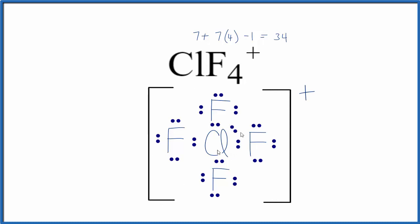Note that we should have these brackets around the Lewis structure and then our positive sign to show that this is an ion. This is Dr. B with the Lewis structure for ClF4 plus. Thanks for watching.